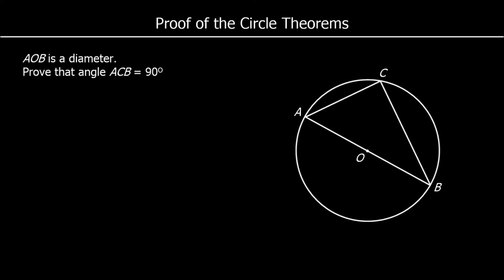In this video, we're looking at the proof of the circle theorems. We're going to go through five different proofs, and we're starting with proving that the angle in a semicircle, or an angle from a diameter, is equal to 90 degrees. So we're told AOB is a diameter, and we need to prove that ACB is 90 degrees.